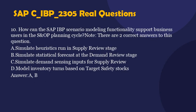Question 10. How can the SAP IBP scenario modeling functionality support business users in the S&OP planning cycle? Note, there are two correct answers to this question. A. Simulate heuristics run in supply review stage. B. Simulate statistical forecast at the demand review stage. C. Simulate demand sensing inputs for supply review. D. Model inventory turns based on target safety stocks. Answer: A, B.